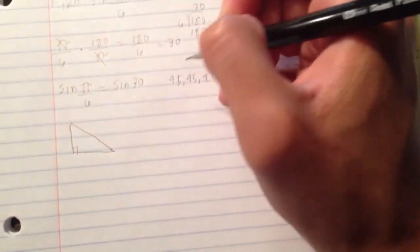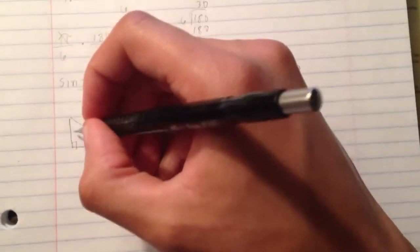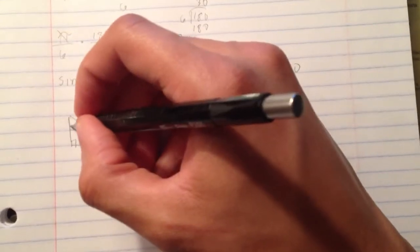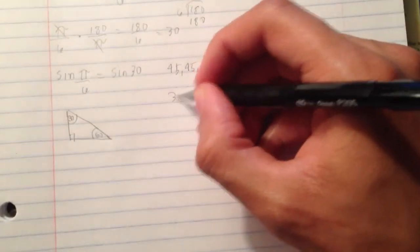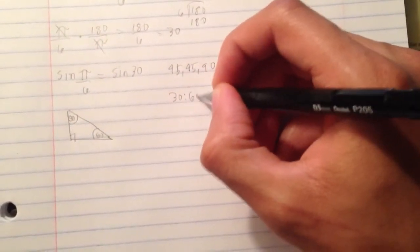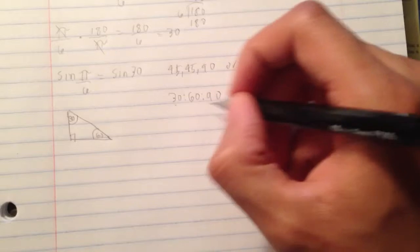So making that little triangle, you got 90 here, 30 there, 60 there. Now, remembering your ratio, you have 30, 60, 90.